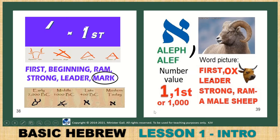The first letter is Aleph. It is always written as a mark in the word — it has a mark. It is the first letter and used to look like an ox: strong ox, Aleph. It then converted to an A shape. First, beginning, a ram, strong leader, mark — it is a strong ram. Here is the Osterlob shape from around 1000 BC. The Greek and Roman left it as this shape. The value is 1 or 1000. It means: ox, leader, strong, ram, and male sheep — the leader.